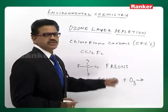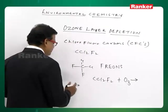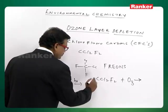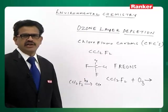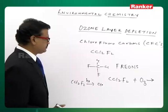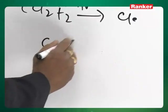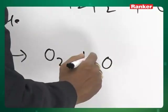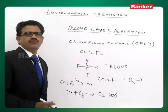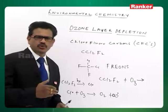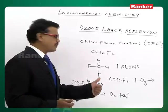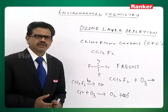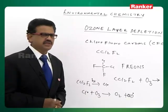Chlorofluorocarbons meet ozone molecules in the stratosphere. The CFCs absorb sunlight and produce chlorine free radicals. Each chlorine free radical attacks nearly one lakh ozone molecules, producing O₂ plus a chlorine free radical. This reaction continues — chlorine free radicals are regenerated and ozone molecules are converted into O₂ molecules. Like this, the thickness of the ozone layer decreases day by day.